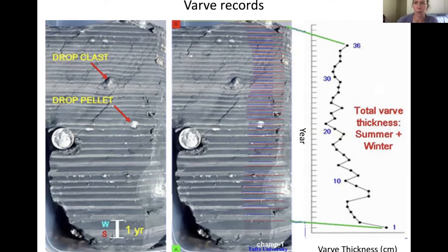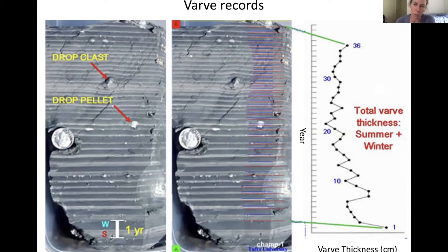What these changes in varve thickness represent are two things: how much sediment is getting into the lake. If the ice sheet is closer, the varves will be really thick; if the ice sheet is far away they'll be thinner — that's proximity to the sediment source. The other thing thickness tells you is how much melt there was on the ice sheet. Really thick layers can mean a very warm summer with a lot of melt; thinner layers suggest a colder summer with less melt. So these can start being used to tell things about climate.